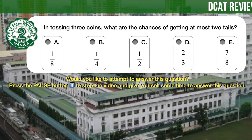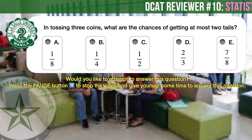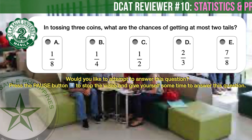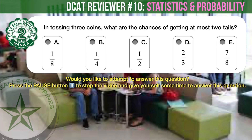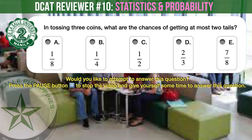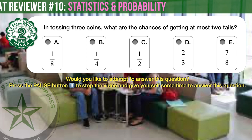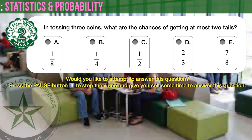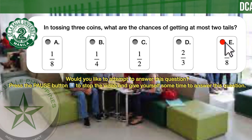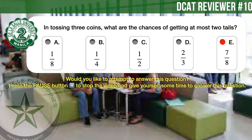Question number 2. In tossing 3 coins, what are the chances of getting at most 2 tails? The correct answer is E — the chances of getting at most 2 tails in tossing 3 coins is 7 over 8.